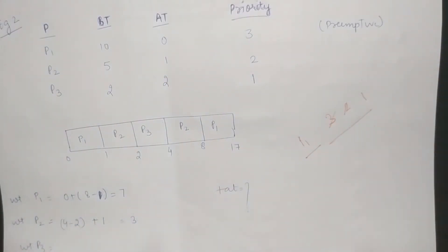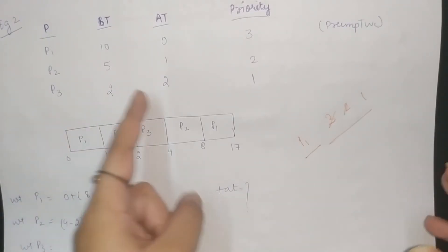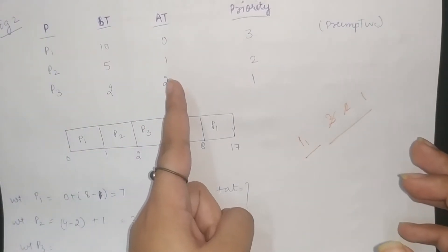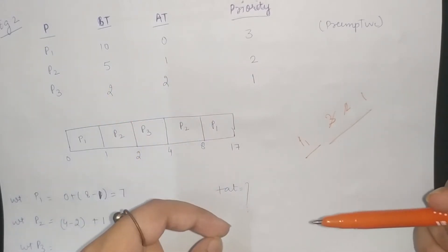Now, let's see. We have to consider the arrival time and the priority. Right? The highest priority is P3. But who arrives first? P1 is the first to arrive. Arrival time has the first priority.